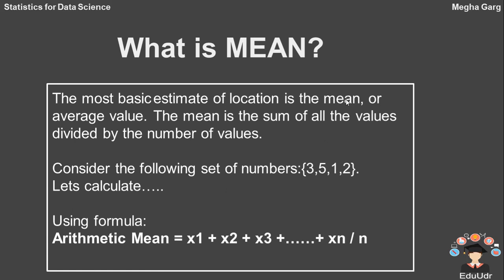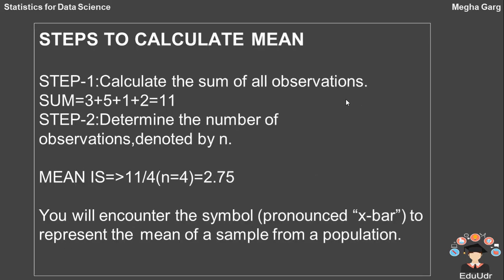How I calculate this? Let's calculate it step by step. Step 1: Calculate the sum of all observations, i.e. 11. Step 2: Calculate the total number of observations, i.e. n. And we have four observations. So, our calculated mean is 11 by 4, i.e. 2.75. You will encounter the symbol pronounced x bar to represent the mean of a sample from a population.